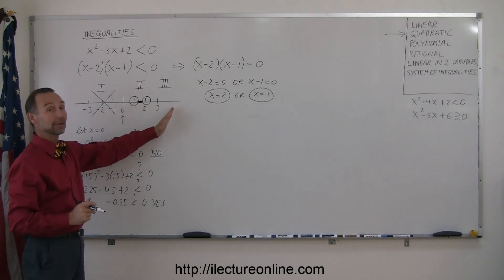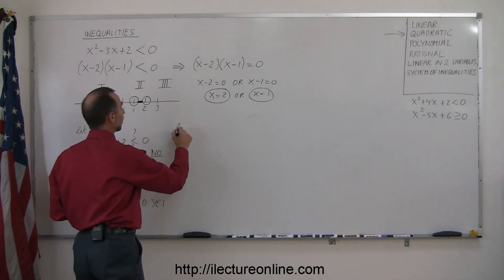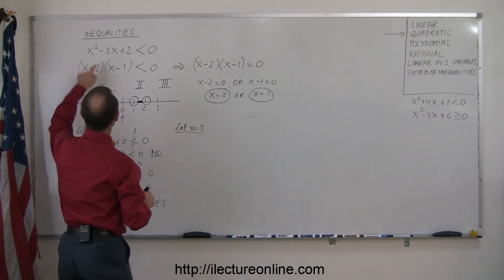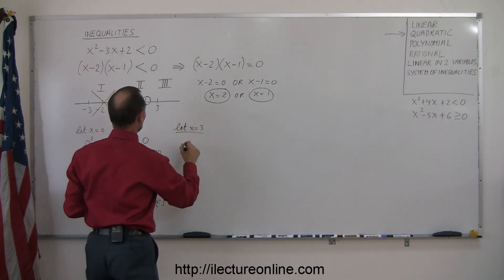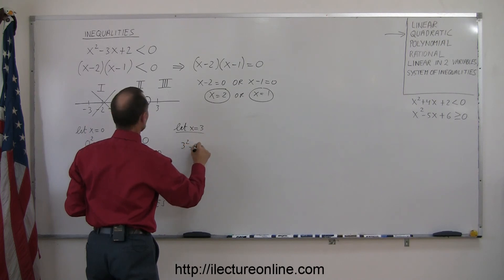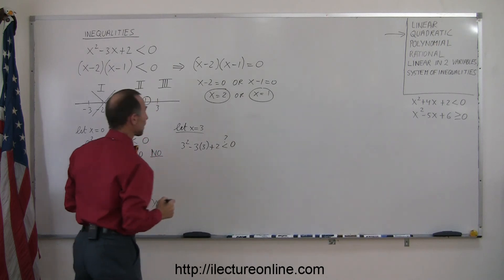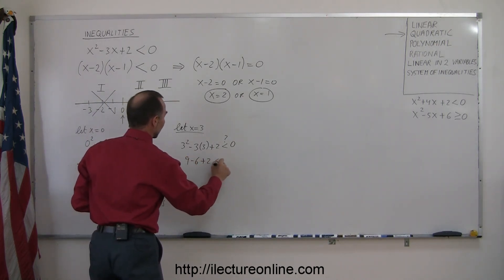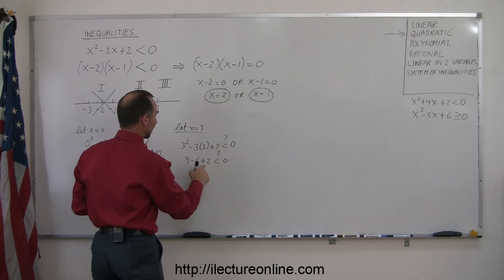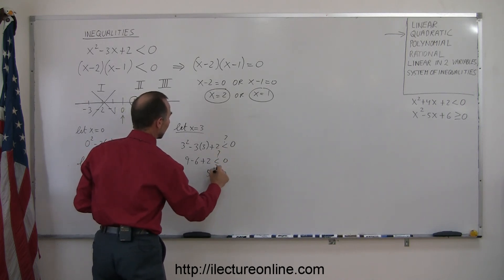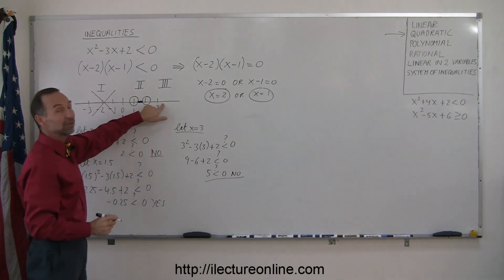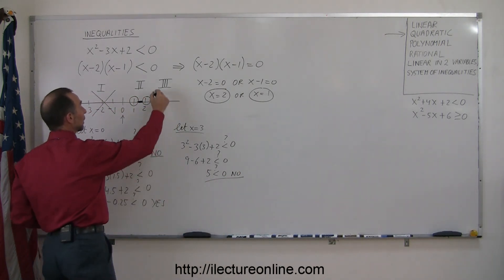Now we try a point in the third region. So let x = 3, plug that into the original inequality. So we have 3² - 3(3) + 2, is that less than 0? So we get 9 - 6 + 2, is that less than 0? And it looks like that's 11 - 6, which is 5, less than 0, and the answer is no, which means that this region is also not part of the solution, so we can eliminate that.